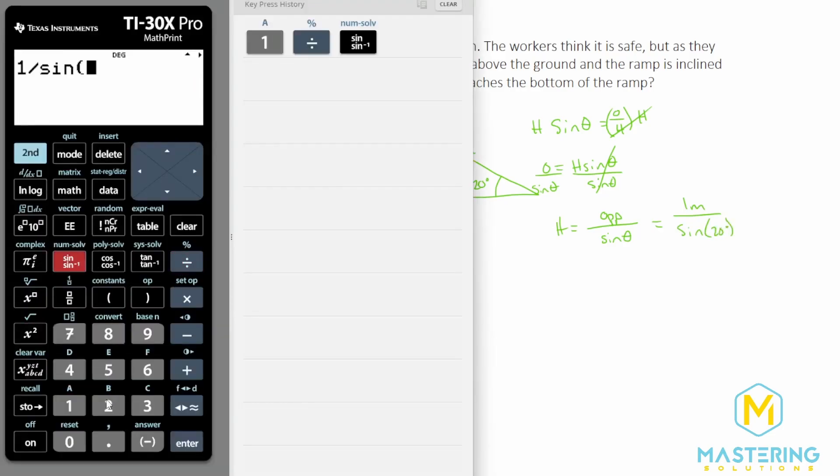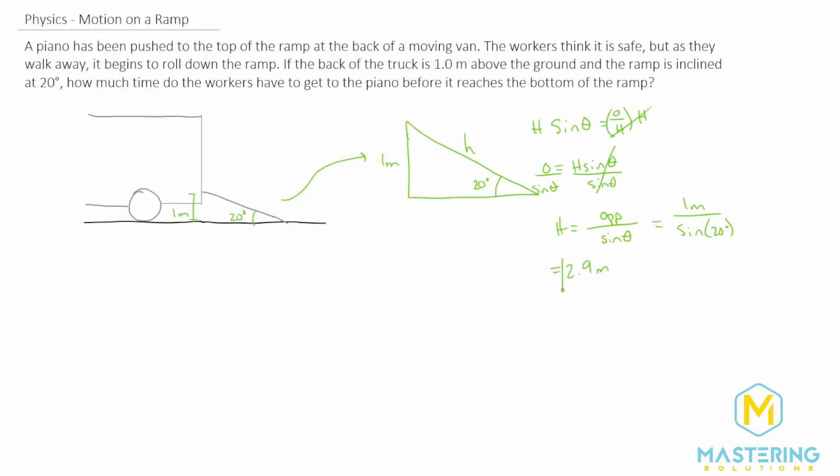So 1 divided by sine 20 gives us a distance for the ramp of 10 meters, and that sounds about right. If we take basically 3 meters times at roughly 3 feet, that gives us about a 9 to 10 foot ramp, so that sounds about typical for what you would expect for a moving truck's ramp.